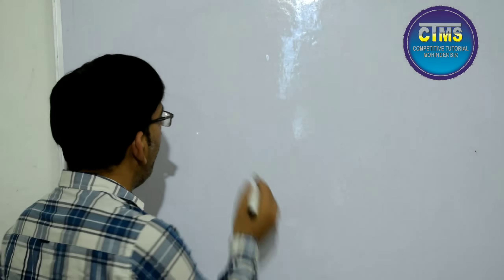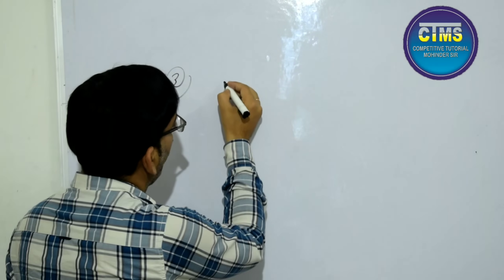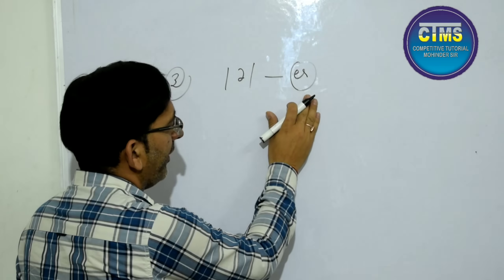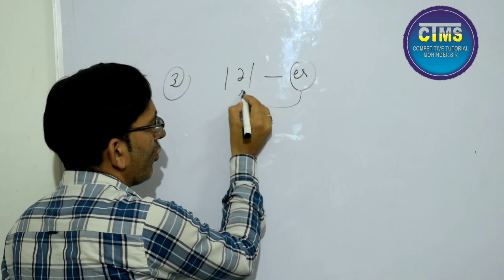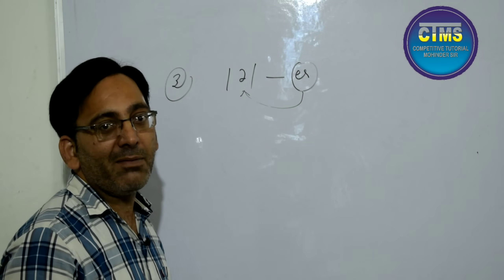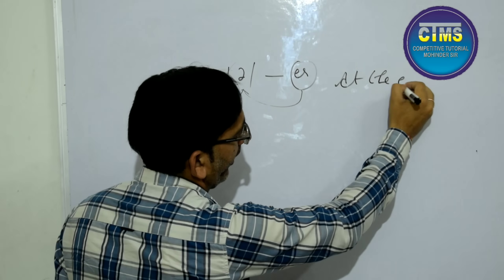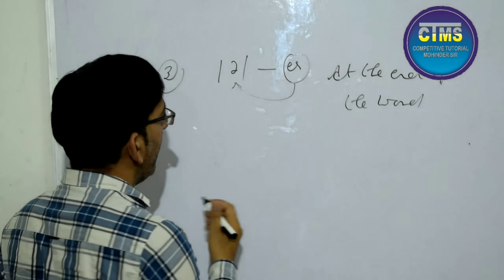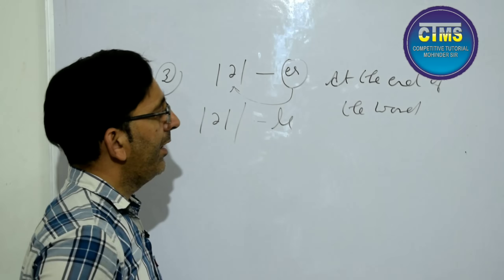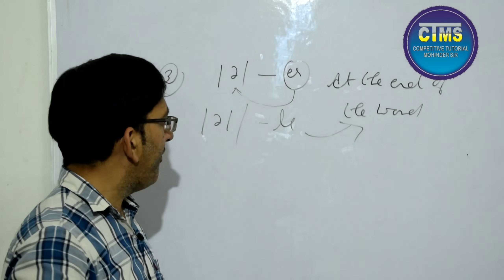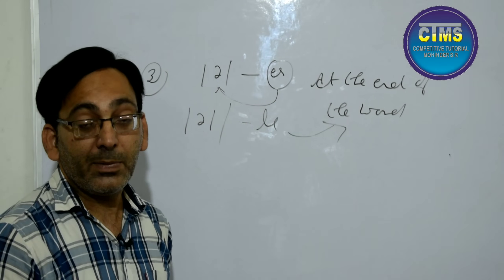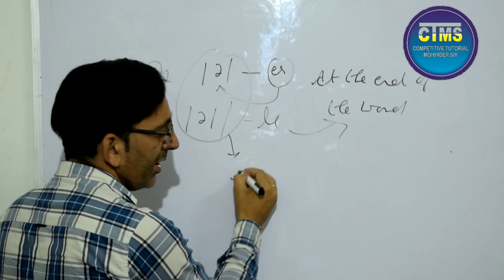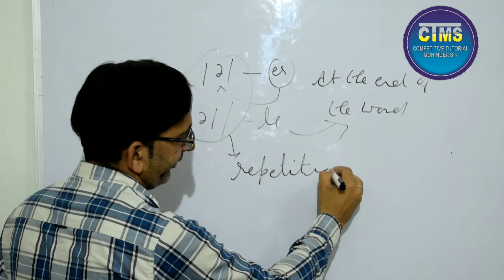Come to the third one. In many words, there is the schwa sound (ə). This schwa sound comes from the combination E-R at the end of words, or from the combination L-E at the end of words. If a word ends with E-R giving the schwa sound, or ends with L-E giving the schwa sound, then both of these endings suggest repetition.